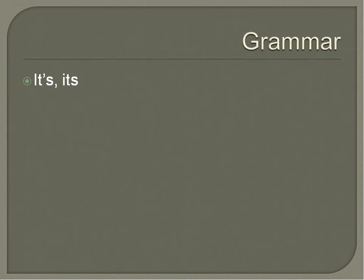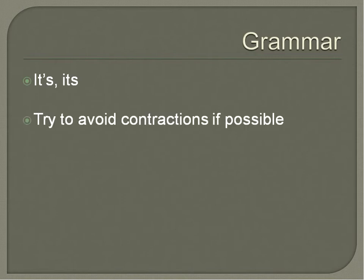Also problematic for a lot of people is the difference between 'it's' and 'its,' both pronounced the same. One is the contraction — 'it is' — the other is the possessive. It may be caught by your spell checker, but it may not. Ultimately, it's up to you to make sure you've written the right one. In general, though, you should try to avoid contractions if possible. So if you mean to say 'it is,' type out 'it is' — 'They do not know whether this passage belongs to the gospel' instead of 'they don't know.'